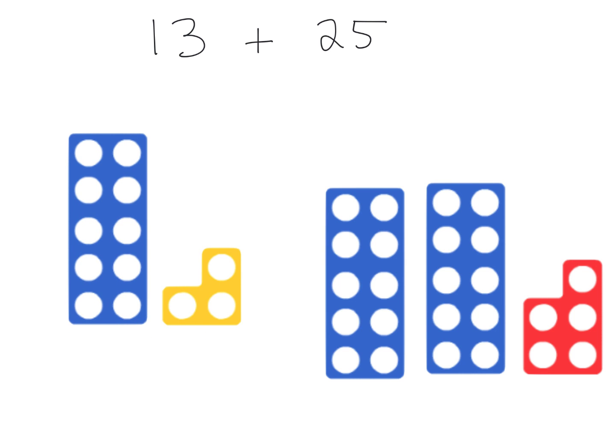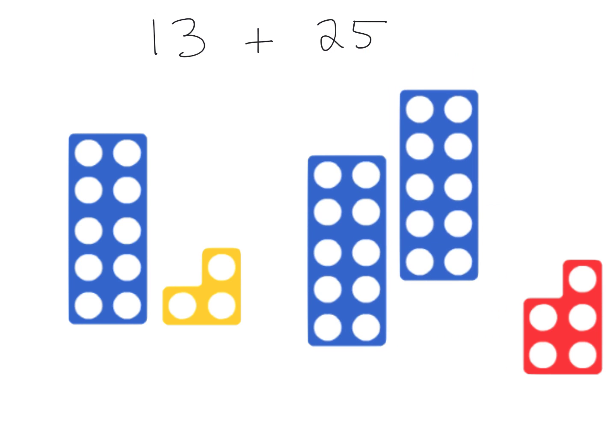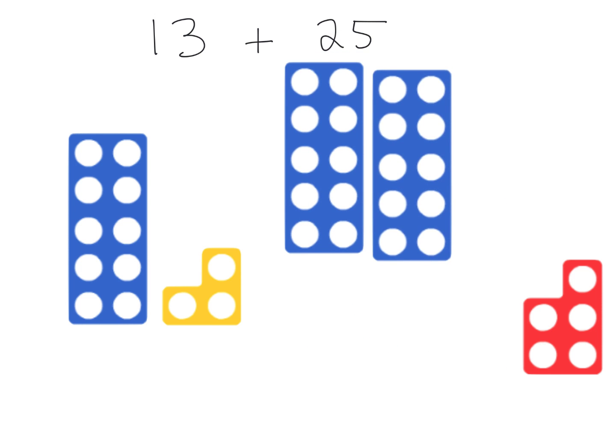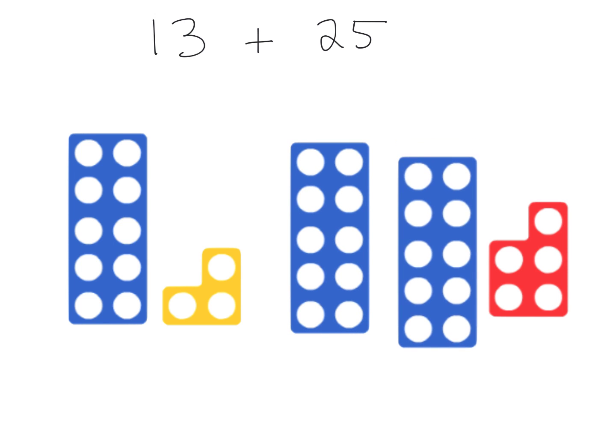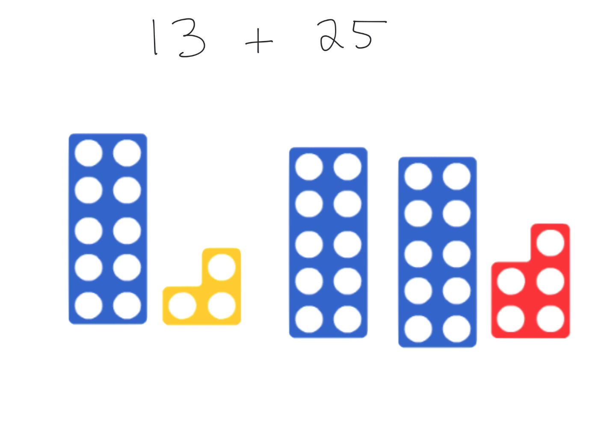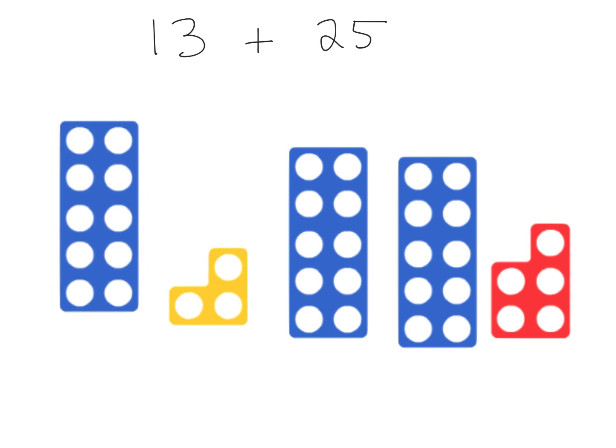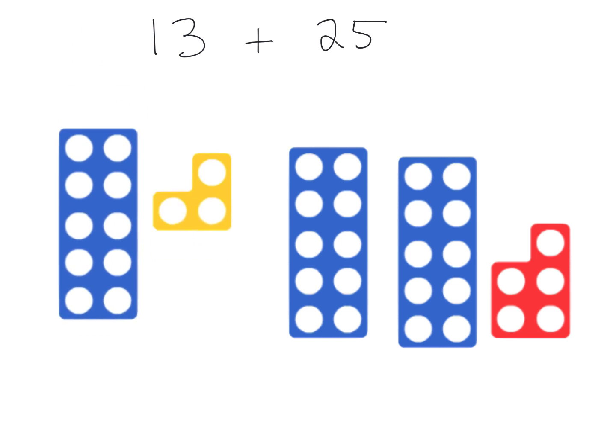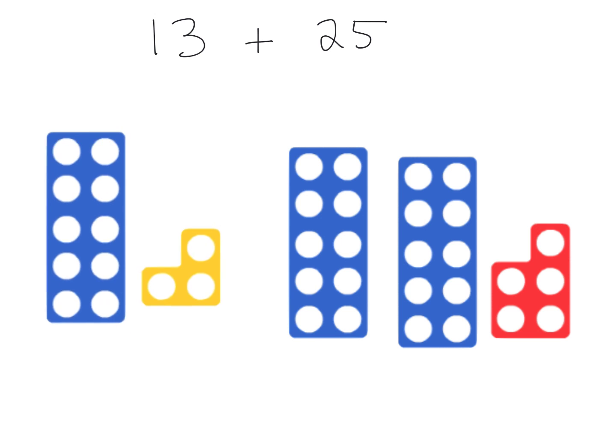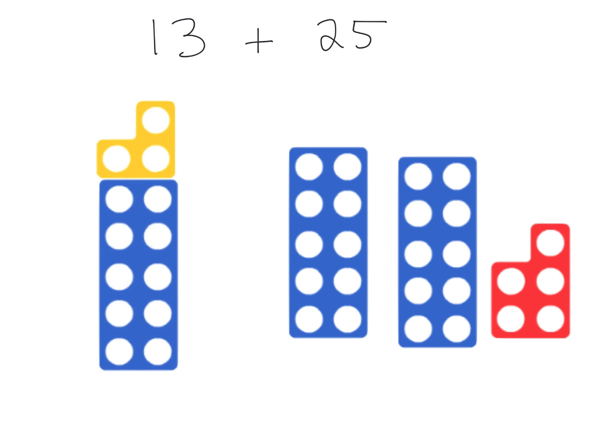And then Numicon for 25 is going to look like this. Here's 20 because I need two tens, and here's my 5 for 25. And then if we wanted to, we're going to take this 13, and we've got our 10 and our 3, and I'm going to decompose 13 by taking it from a number that looks like this, and I'm going to decompose.